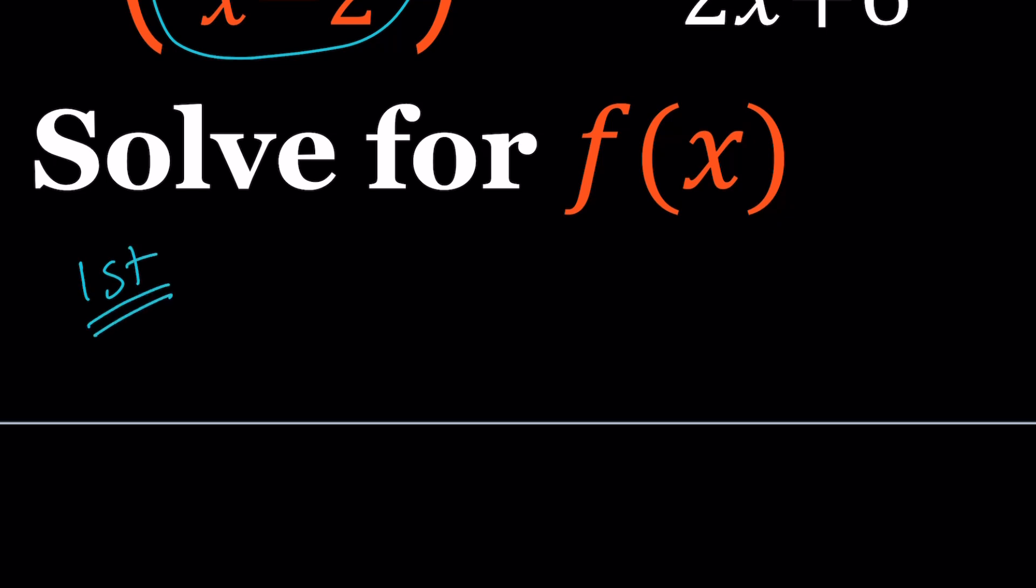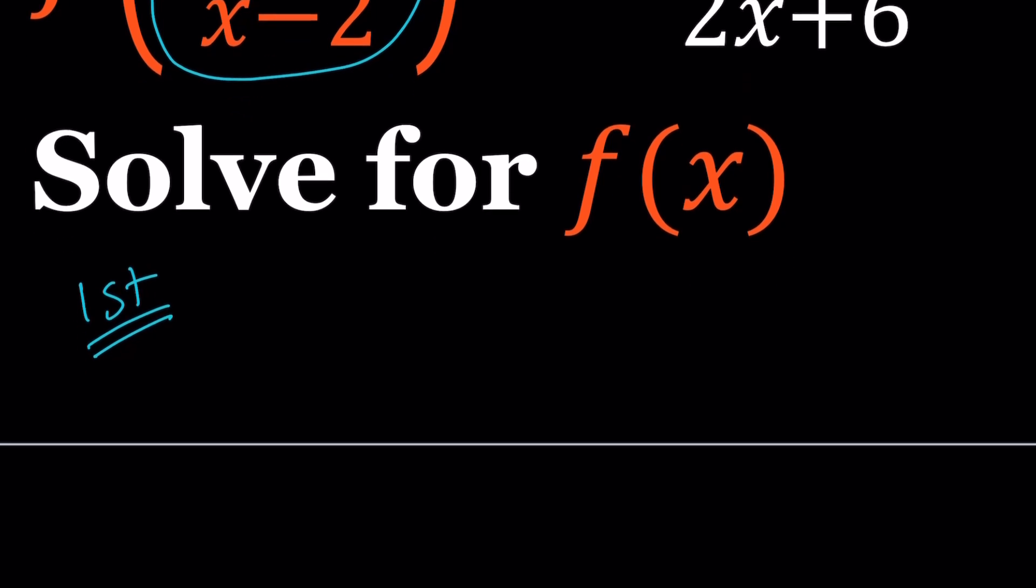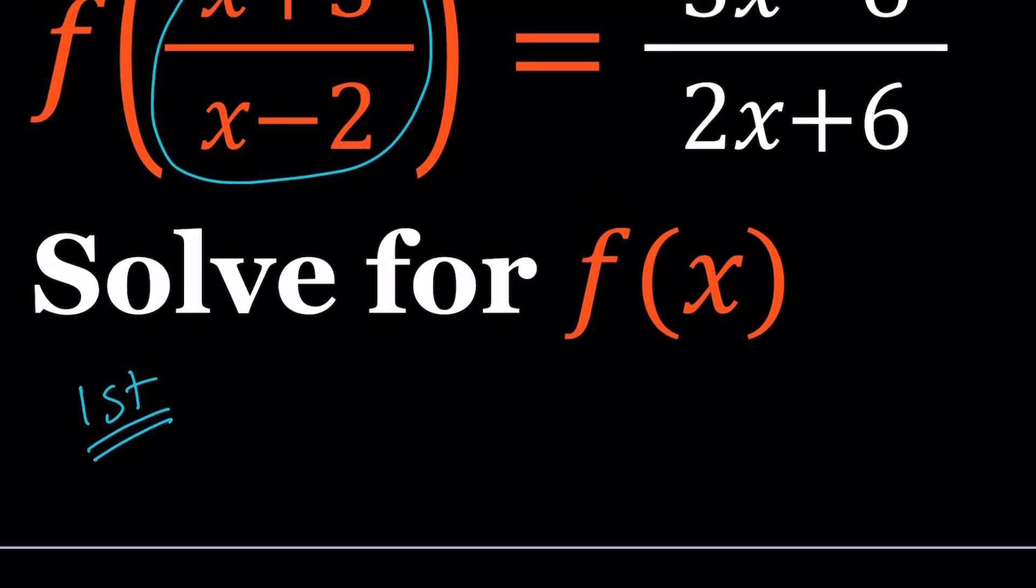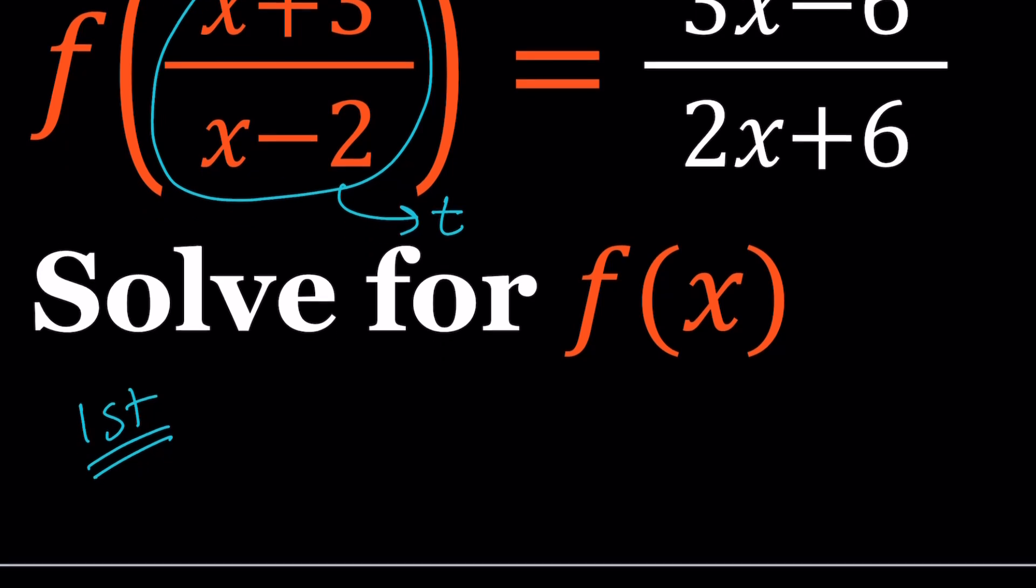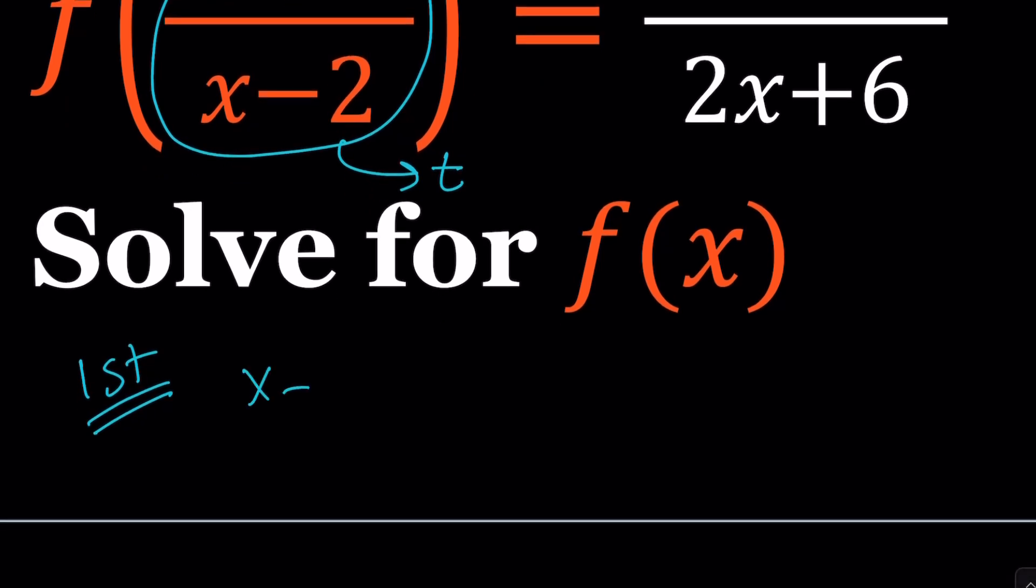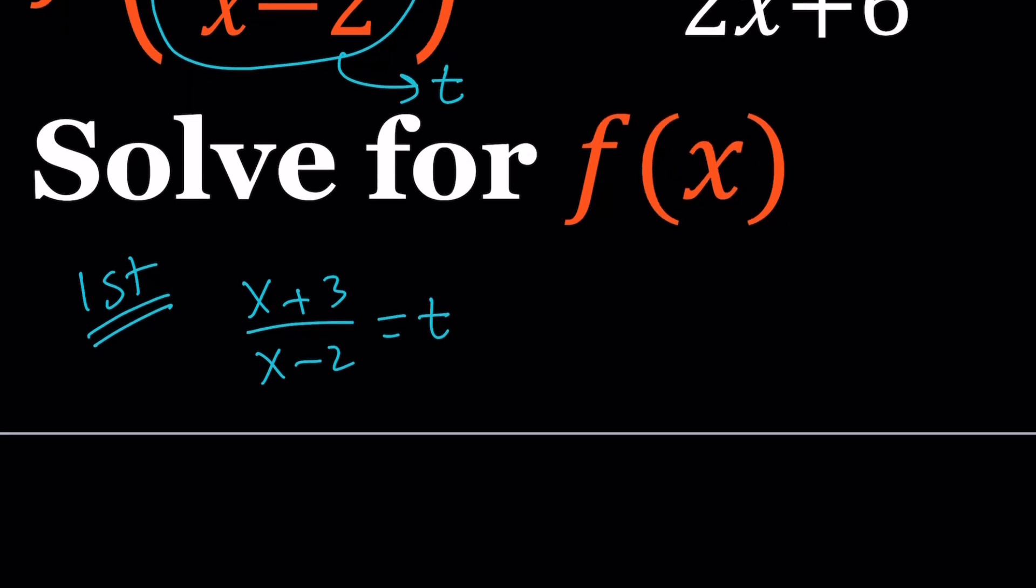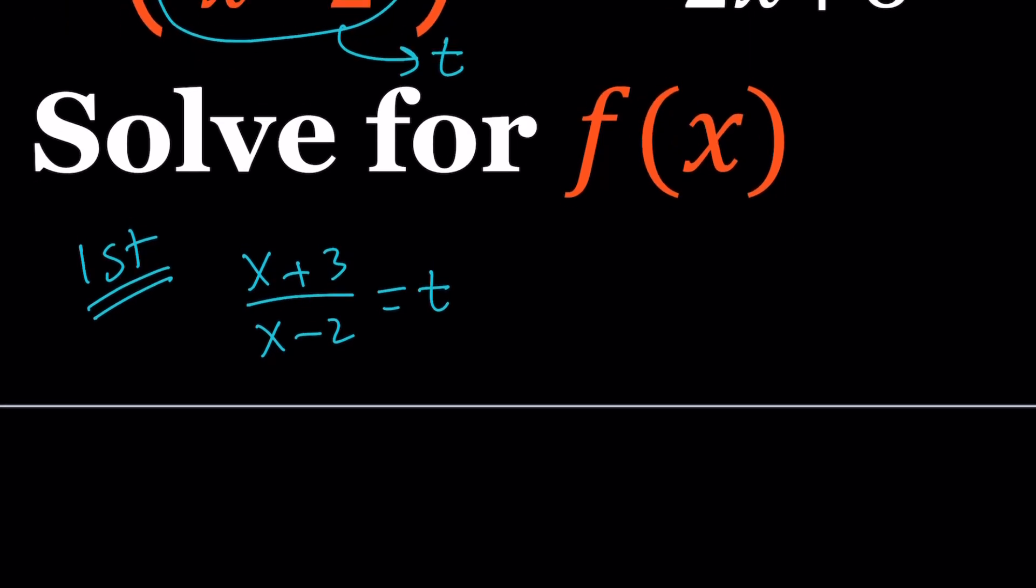The first method is pretty good because even though it takes longer than the second one, it is a general method. So it can pretty much be applied to any function as long as you can solve for x. So let me show you how that works. I want to replace the whole thing with another variable like t. So let's set this equal to t. And then from here, we're going to solve for x. We're going to solve for x.